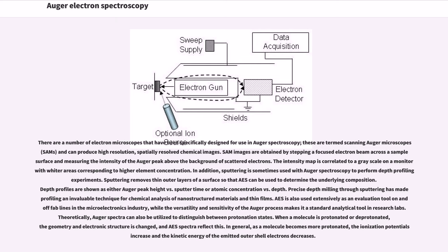In addition, sputtering is sometimes used with Auger spectroscopy to perform depth profiling experiments. Sputtering removes thin outer layers of a surface so that AES can be used to determine the underlying composition. Depth profiles are shown as either Auger peak height versus sputter time or atomic concentration versus depth. Precise depth milling through sputtering has made depth profiling an invaluable technique for chemical analysis of nanostructured materials and thin films. AES is also used extensively as an evaluation tool on and off fab lines in the microelectronics industry, while the versatility and sensitivity of the Auger process makes it a standard analytical tool in research labs.